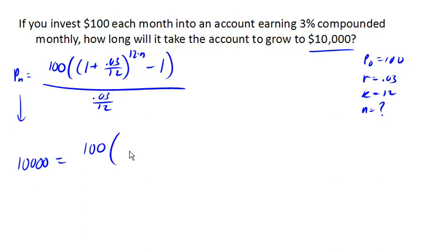Now, let's go ahead and start simplifying a little bit. So .03 over 12 is .0025 to the 12n minus 1 over .0025.